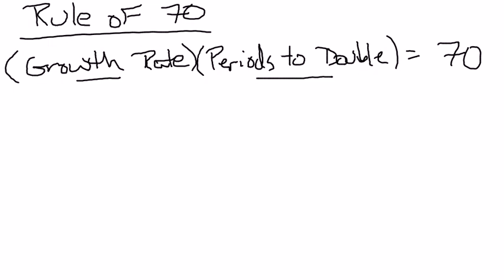And don't worry about where the formula comes from. It's actually an approximation, and I could prove it using natural logarithms, but I'm not going to bother doing that. So just accept this as an article of faith that the growth rate of a variable per period times the number of periods to double equals 70.